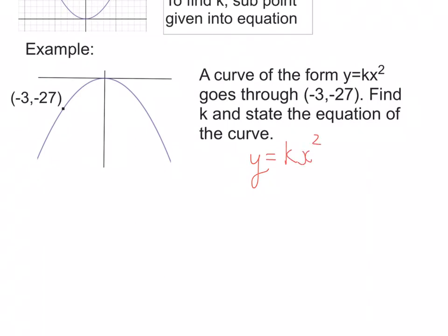I'm going to substitute in the point we know, which is (-3, -27). So the y, well, that's -27 at that point, is equal to k, well, that's what we want to work out, times by (-3) squared, put that in a bracket.